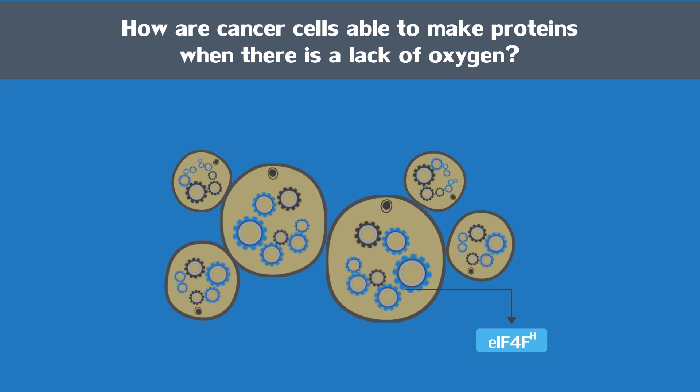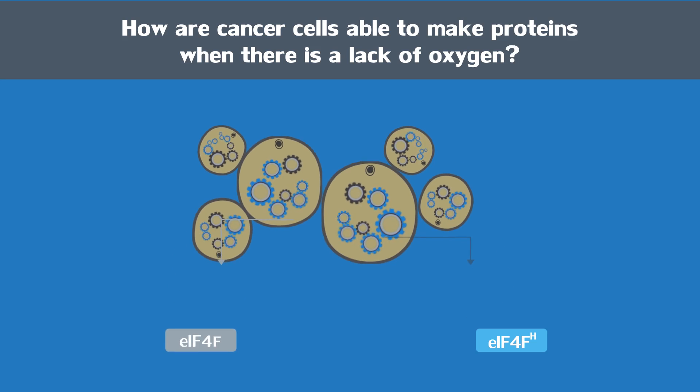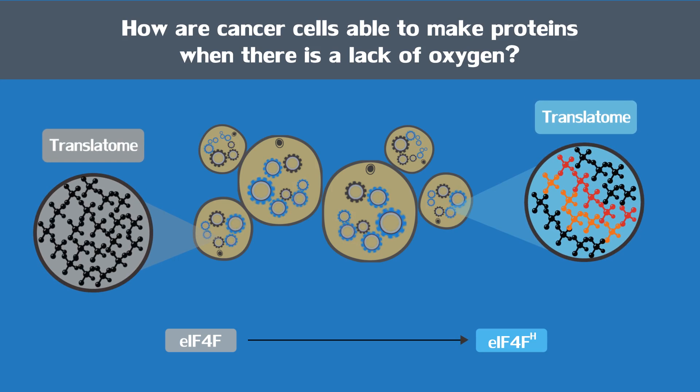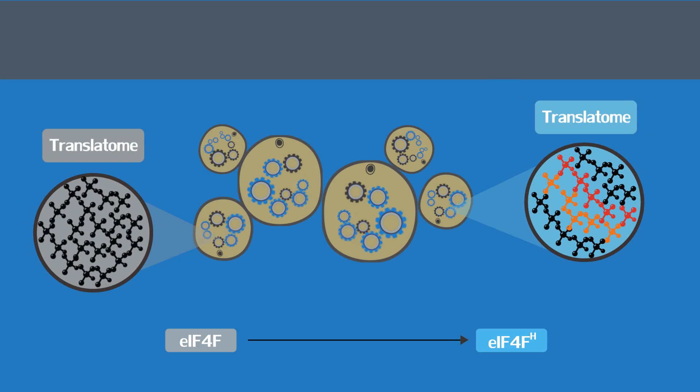EIF4FH contains related but distinct components compared to EIF4F. The switch between 4F and 4FH enables cells to generate different protein populations, or translatomes, depending on oxygen levels. This translatome reprogramming is what enables cells to survive and adapt to changing oxygen levels.